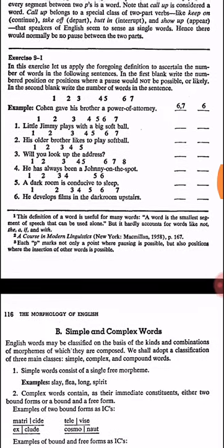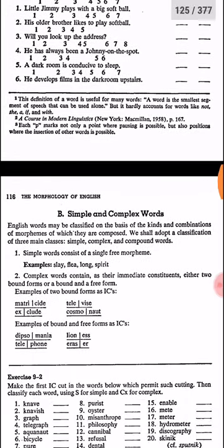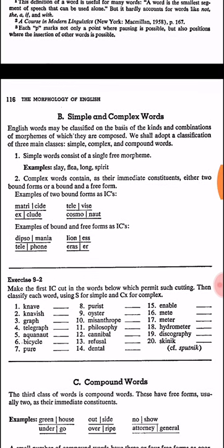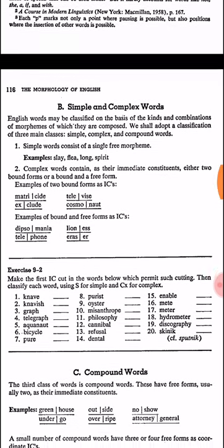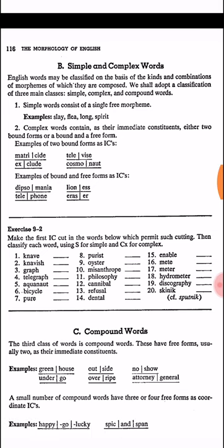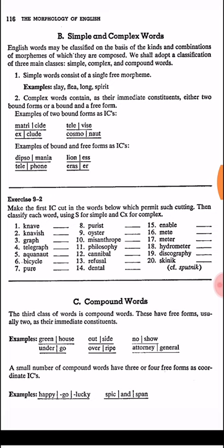What are the classes of a word? We have three different classes of words: simple, complex, and compound words. عدنا ثلاث أصناف من الكلمة. The simple one which has just one free morpheme — النوع البسيط اللي بيها واحد free morpheme، يعني المقطع اللي بي معنى.